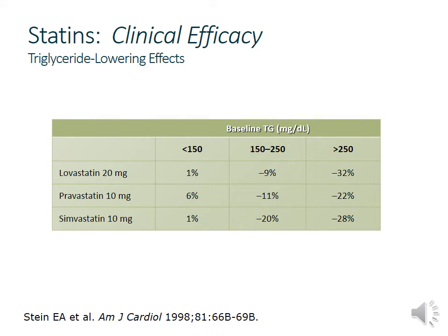For triglyceride effects, the higher the patient's triglycerides are to begin with, the more effective statins will be at reducing them. Someone with triglycerides less than 150 (considered normal) sees modest effects, while someone with triglycerides greater than 250 can see about a one-third reduction. The reason: triglycerides largely come from VLDL, and by decreasing VLDL production in the hepatocyte, fewer triglycerides are released into systemic circulation.